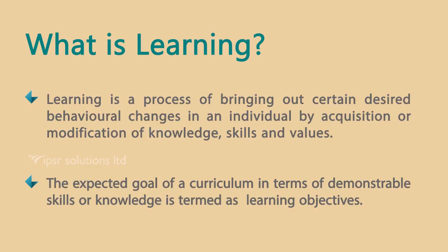The second aspect implied in this statement is that learning happens through the acquisition or modification of knowledge, skills, and values. Knowledge is something that nurtures the mental activities of the learner. Skill is something that strengthens the motor-related activities of the learner. And values fine-tune the appreciation or the mannerism of an individual. The expected goal of a curriculum, in terms of demonstrable skill or knowledge, is termed as learning objectives.